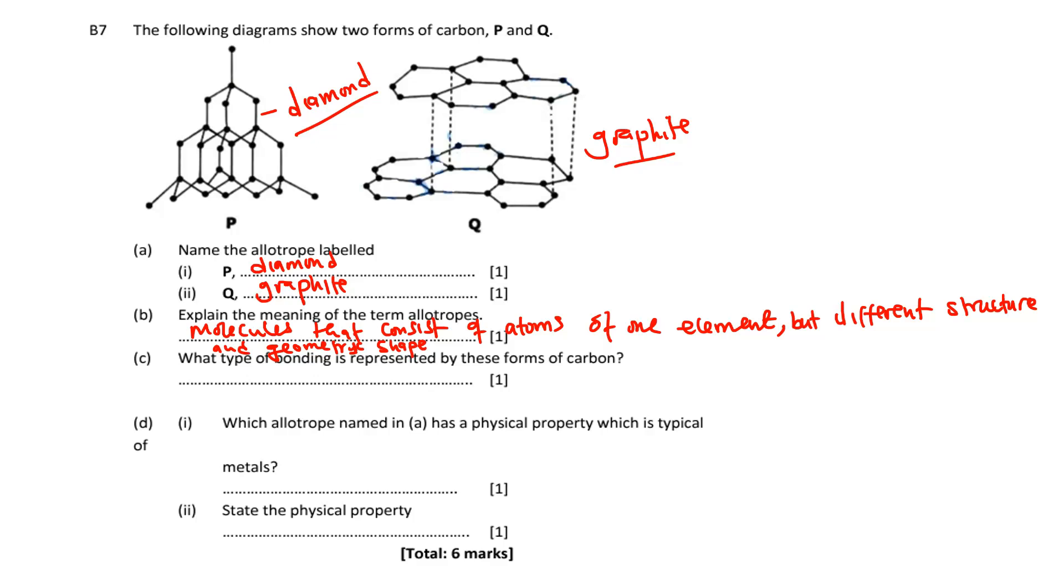What type of bonding is represented by these forms of carbon? The type of bond here is covalent bond, because carbon and carbon are bonded and those are non-metals. So it's a non-metal to non-metal bond.